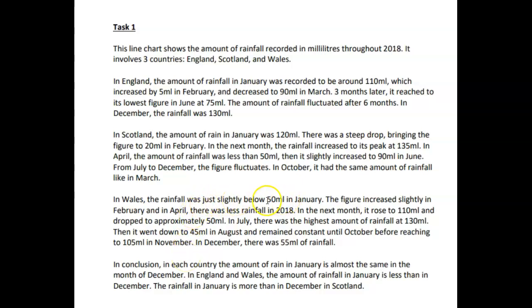In Wales, the rainfall was just slightly below 50 ml in January. The figure increased slightly in February and April. There was less rainfall in 2018 — I don't understand that, and I don't know why we're talking about February and April again. In the next month — which next month? You've talked about February and April, so what month are we talking about now? It rose to 110 and dropped to approximately... Using a little thought, I can understand you're maybe talking about May and June, but the way you've expressed it is not clear. In July, there was the highest amount of rainfall, 130. Then it went down to 45 ml in August and remained constant until October before reaching 105 in November. In December, there was 55 ml rainfall.